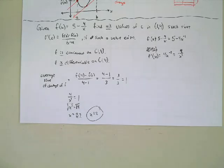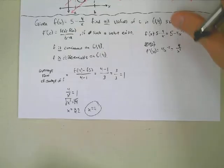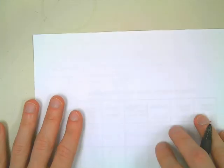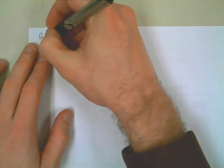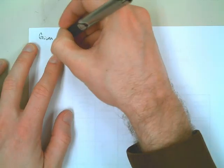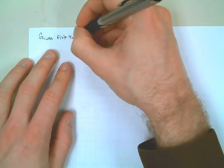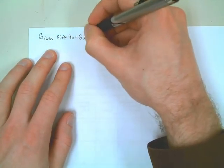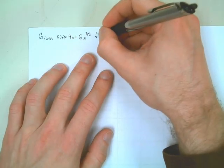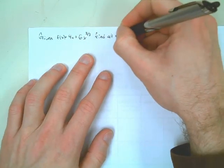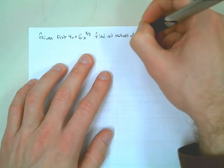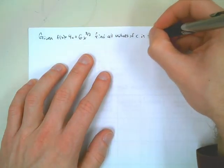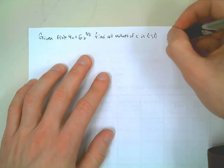Let's try one more. Given F(x) = 4x plus 6x to the 2/3, find all values of C in the interval [-1, 1] that are guaranteed by the mean value theorem.